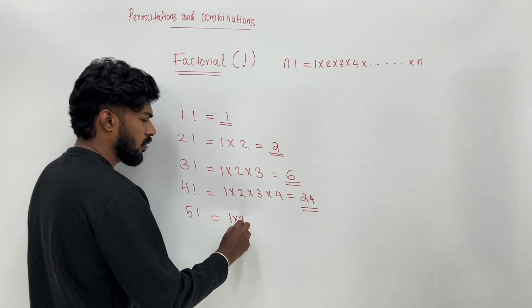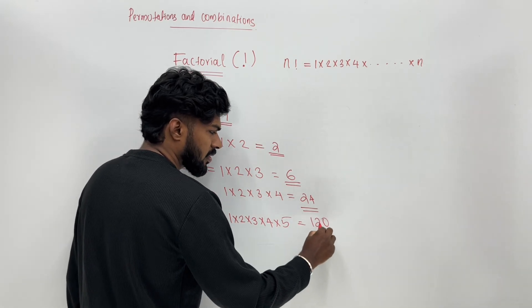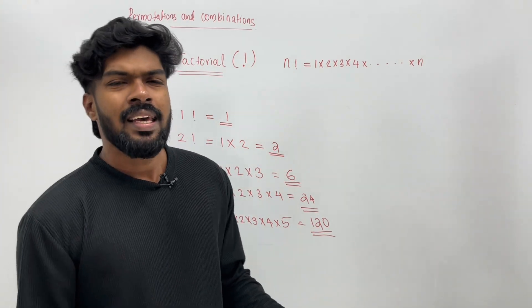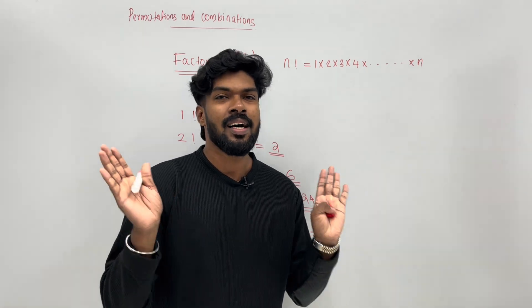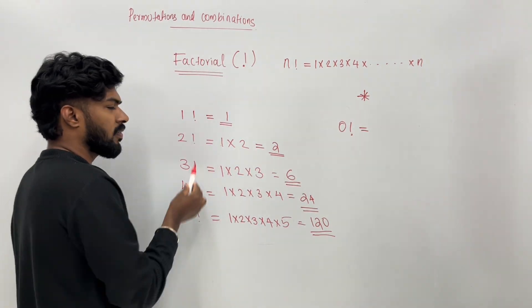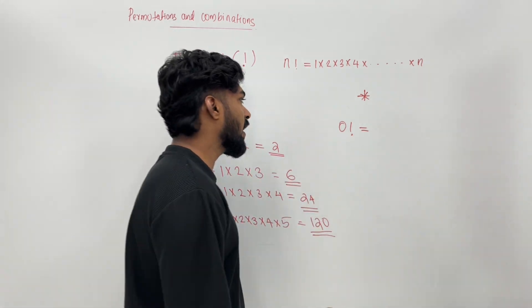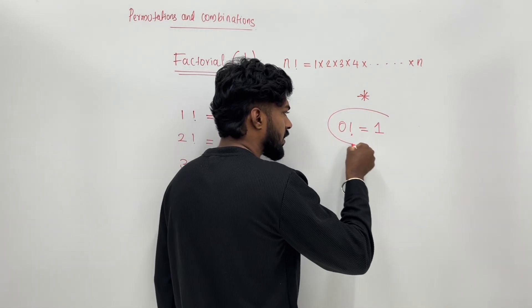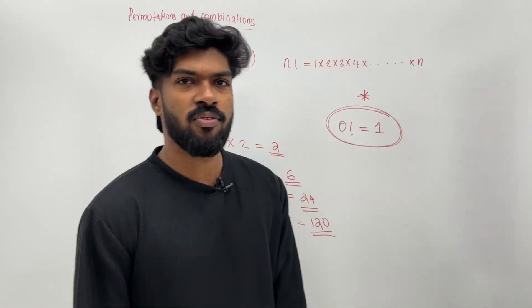5 factorial is 1 into 2 into 3 into 4 into 5, multiply it. If you have the answer for 24, then multiply by 5 and you will get 120. Now, an important item: 0 factorial. If you have 0 factorial, you will get 1. What is 0 factorial? 0! equals 1. This property is the same way.